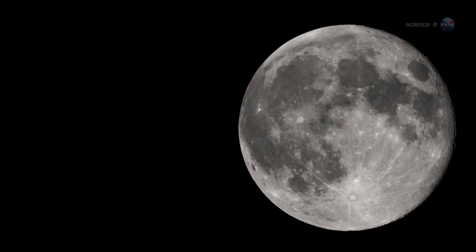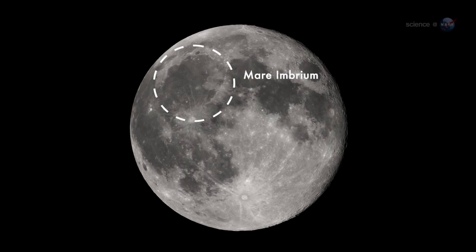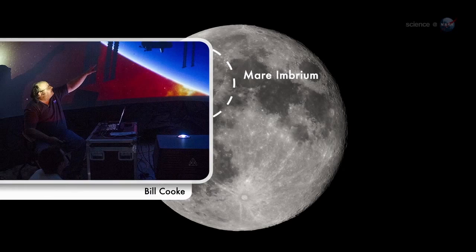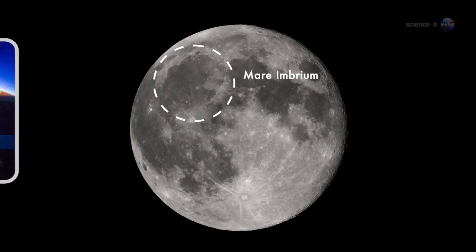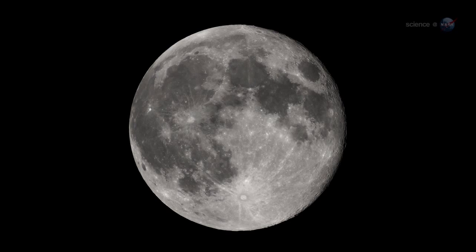On March 17, 2013, an object about the size of a small boulder hit the lunar surface in Mare Imbrium, says Bill Cook of NASA's Meteoroid Environment Office. It exploded in a flash nearly ten times as bright as anything we've ever seen before.